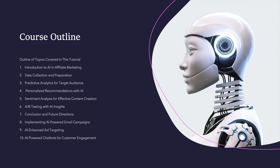The eighth topic is Implementing AI-Powered Email Campaigns — using AI to segment email lists, personalize content, and automate email campaigns with Python and tools like SendGrid. Email is one of the most important and widely used campaign channels, and ultimately you need to reach the client directly.